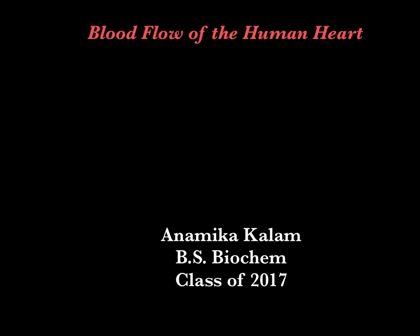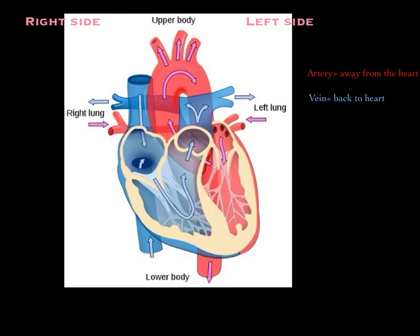Hi there guys, today I'm going to go over the circulation of blood flow of the human heart. I hope this video will be a good review or a brief introduction for most of you. The first thing I want to point out is that the right side of your heart is colored blue and the left side is colored red. The blue indicates deoxygenated blood, whereas the red indicates oxygenated blood.